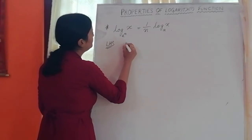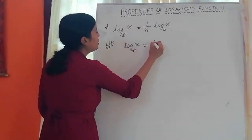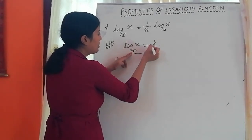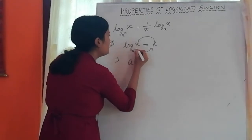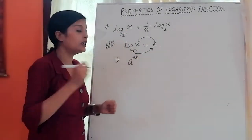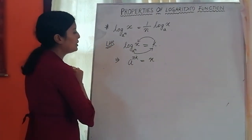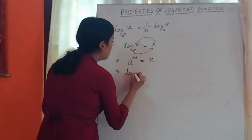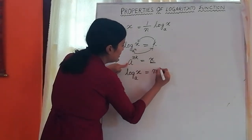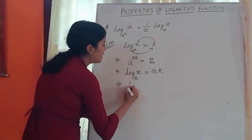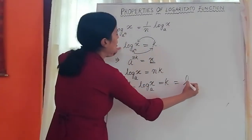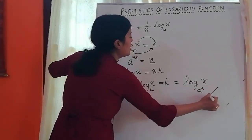Let log x base (aⁿ) equal k. In exponential form, (aⁿ) to the power k equals x, which means a to the power nk equals x. Taking log base a on both sides: log x base a equals nk, so k equals (1/n) log x base a. Since k is log x base (aⁿ), we have: log x base (aⁿ) equals (1/n) log x base a. Proved.